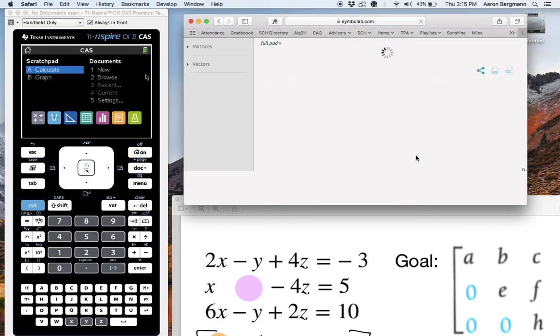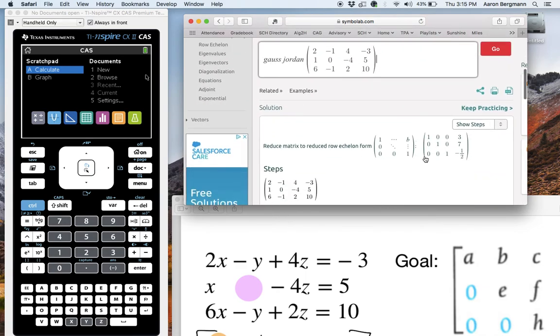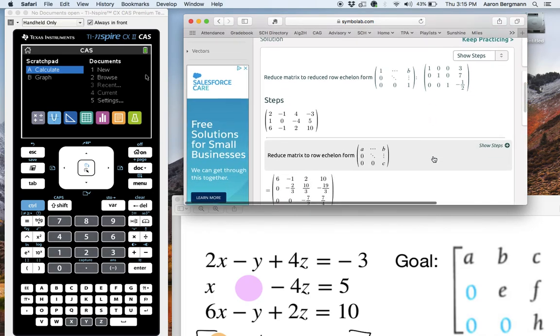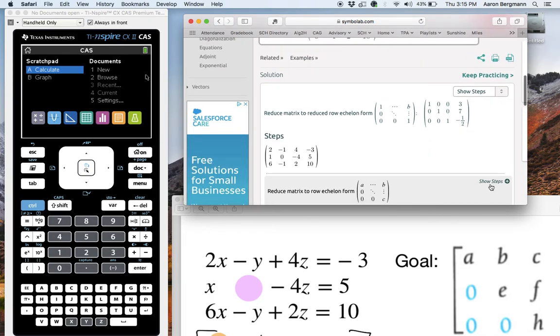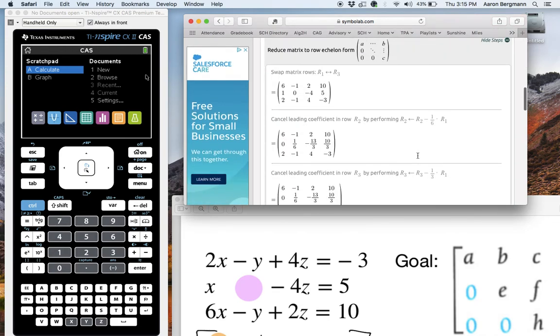And what it tells you is, first of all, it gives you the answer, 1, 1, 1, and then 3, 7, negative 1 half. Pretty fast. It even shows you the steps too. If you click on that, it'll show you how it did all the work.